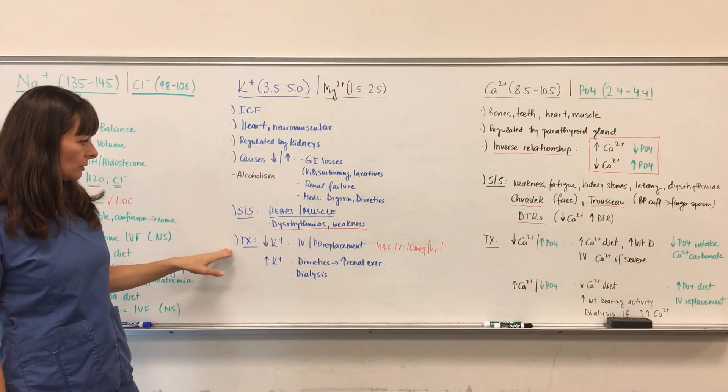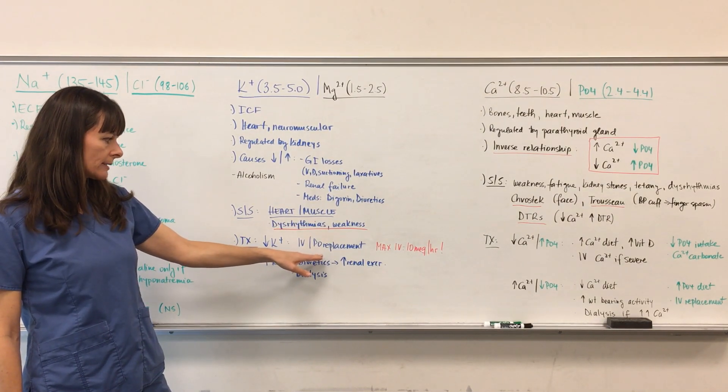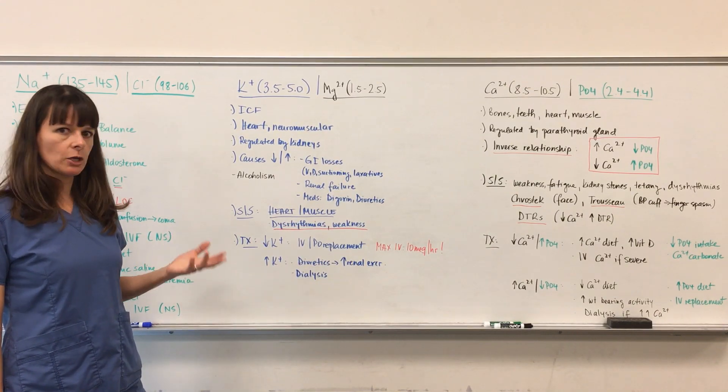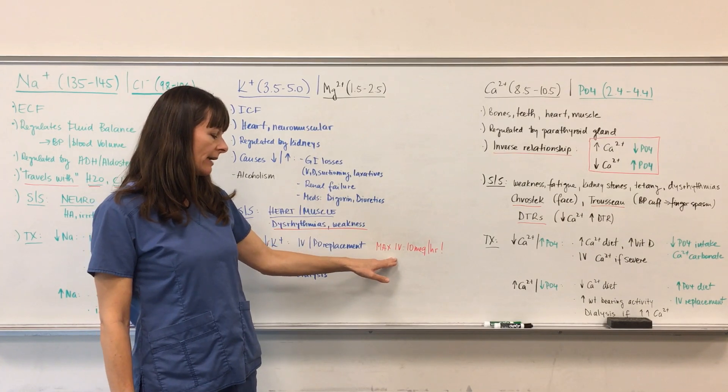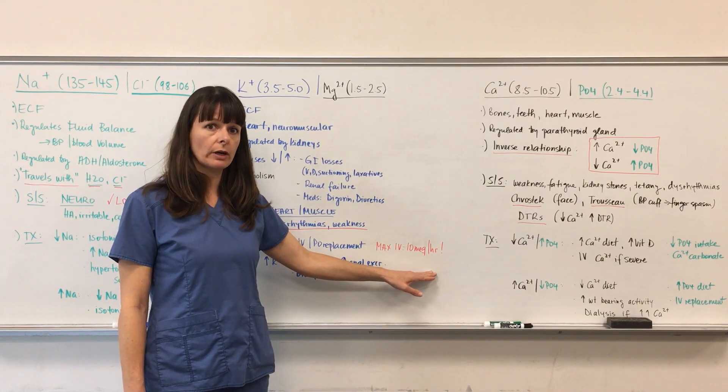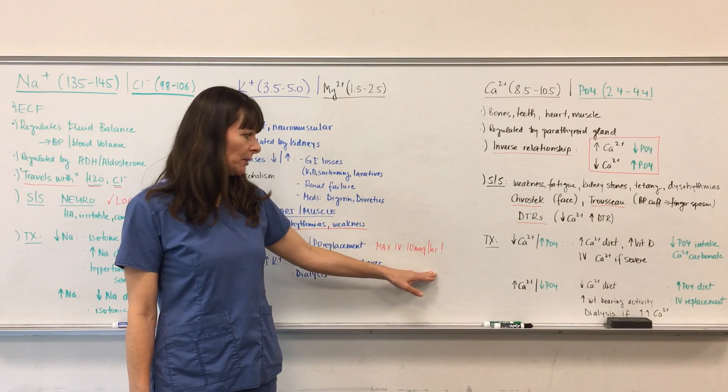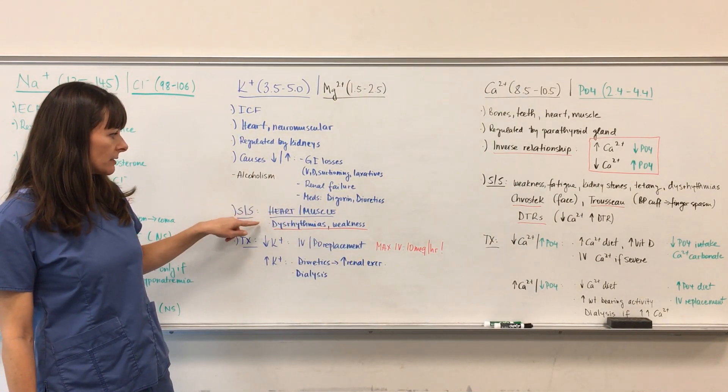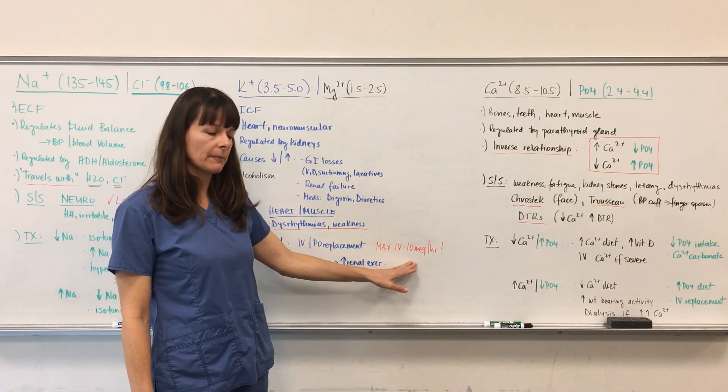Treatment for low potassium as well as low magnesium would be IV or PO replacement. Depending on the severity of the hypokalemia, we'll give the patient either IV or PO replacement. I wrote here in red the maximum IV administration rate will be 10 mEq per hour. This is very critical and comes up on a lot of exams, including the NCLEX, because if you give potassium too fast it can lead to dysrhythmias and can actually cause death in the patient. So 10 mEq is the maximum rate per hour potassium can be infused.